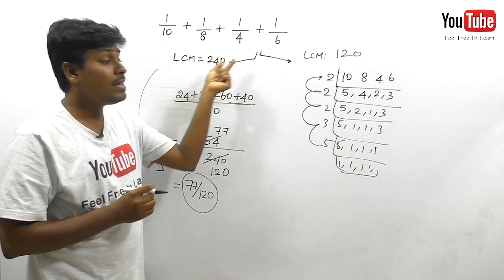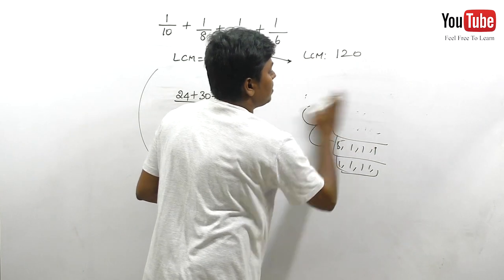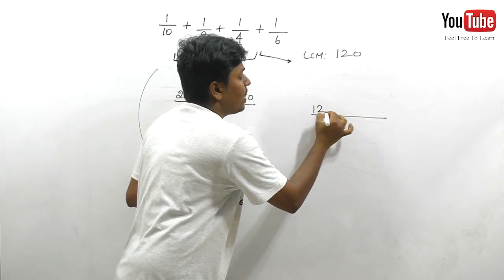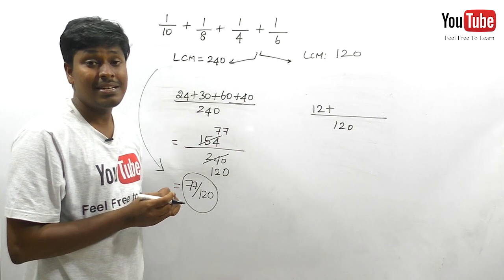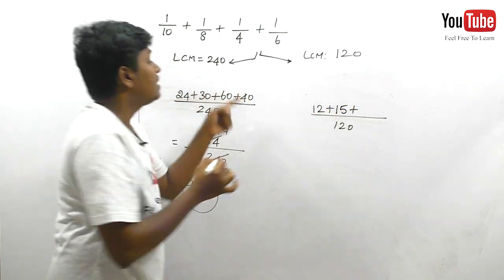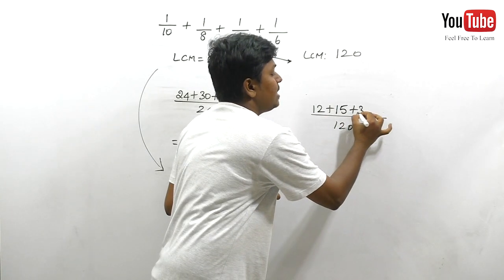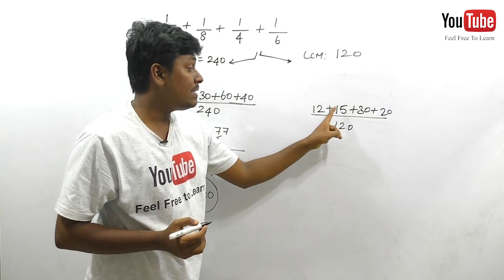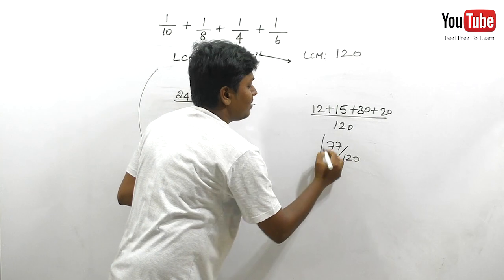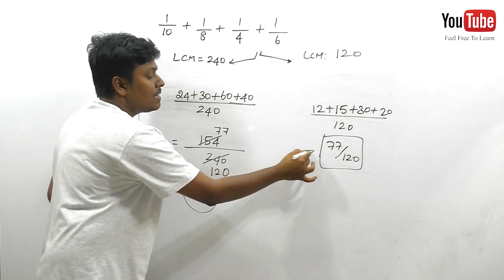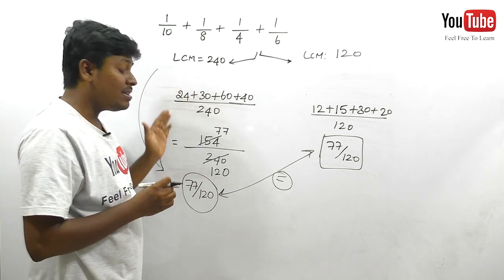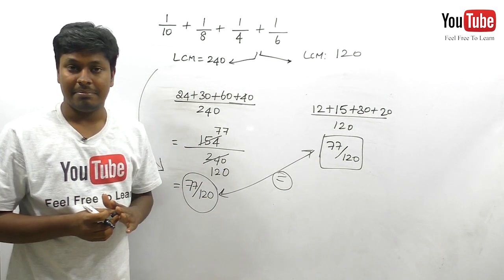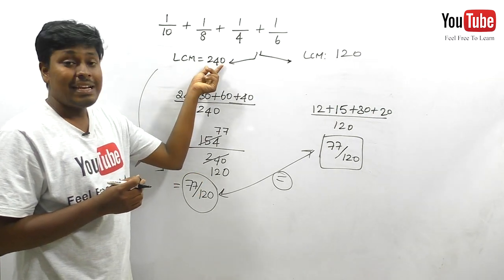By the traditional method, LCM = 120. Using 120: 120 ÷ 10 = 12, 120 ÷ 8 = 15, 120 ÷ 4 = 30, 120 ÷ 6 = 20. Sum = 12 + 15 + 30 + 20 = 77, over 120. So we get 77/120. Both methods give the same result — 77/120. This methodology is not wrong at all; the shortcut method is exactly correct, and better to use it to take LCM faster.